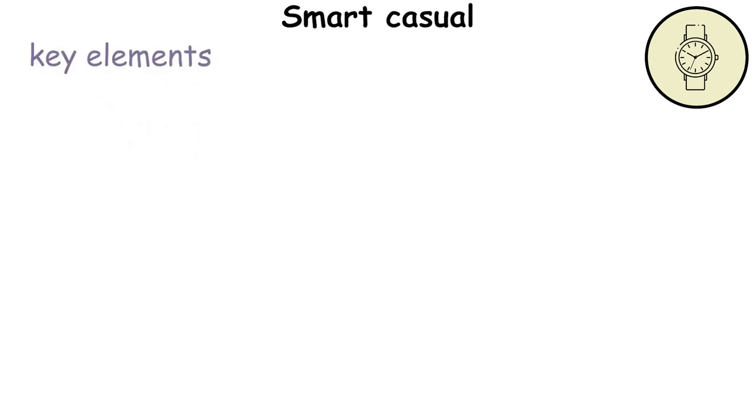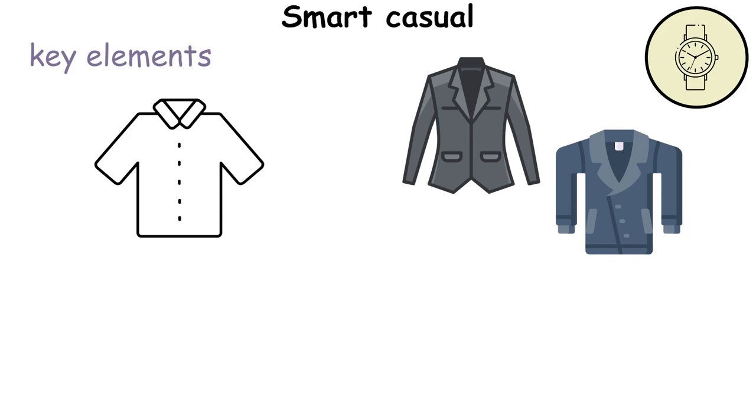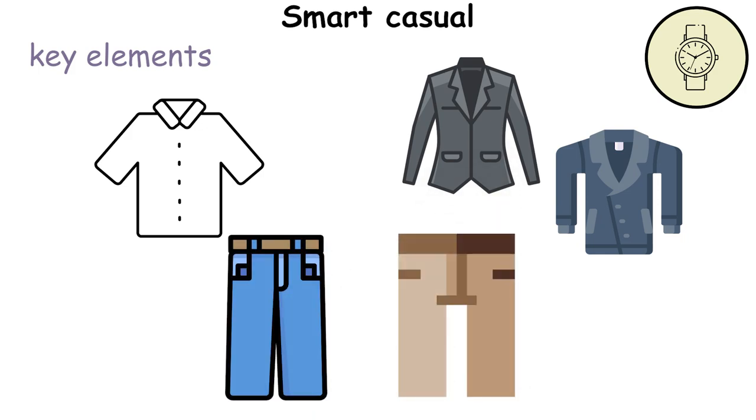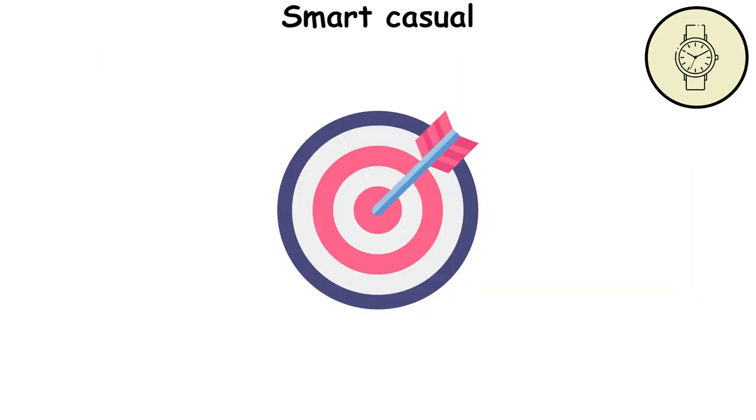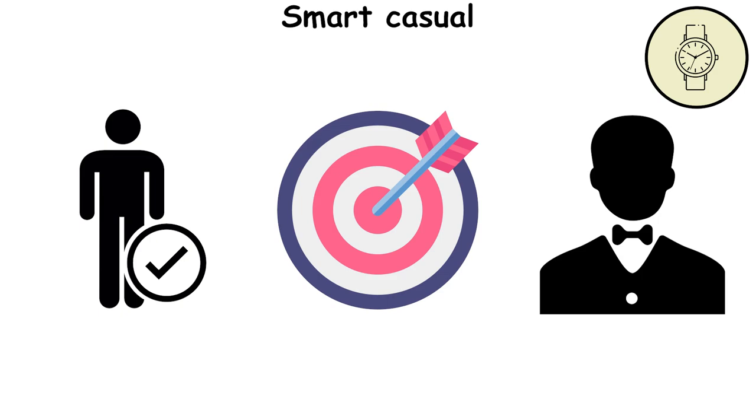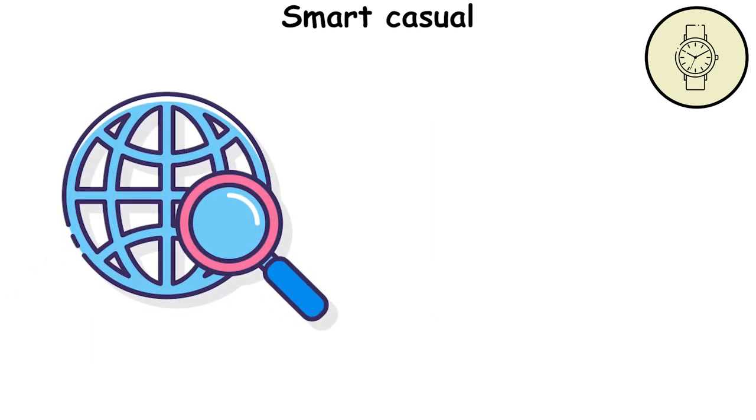The key elements of this style often include a blazer or jacket, a collared shirt, and well-fitted jeans or chinos. Shoes should be smart, like loafers or brogues, and not trainers or sandals. The goal is to appear polished and sleek without being too stuffy. Smart Casual is a versatile and stylish choice for men.